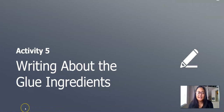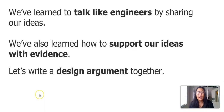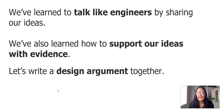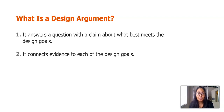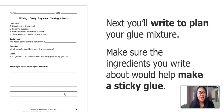In this last part of our lesson, we will write about the glue ingredients. We've learned to talk like engineers by sharing our ideas, and we've also learned how to support ideas with evidence. Now we're going to write a design argument together. A design argument answers a question with a claim about what best meets the design goals, and it connects evidence to each of the design goals. Remember, our evidence makes our writing more convincing. This is where we write our plan to make a glue mixture using ingredients that would help make a sticky glue.